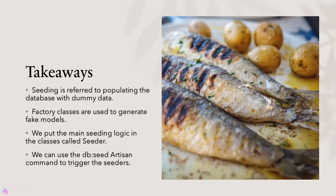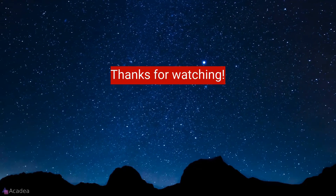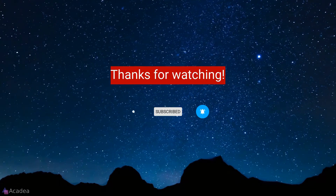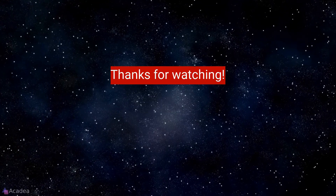Key takeaways for this lesson: seeding refers to populating a database with dummy data so we can easily test our application. Factory classes are used to generate fake model records so we don't need to create them from scratch. We put the main seeding logic in seeder classes, and to trigger them run the php artisan db:seed command. If you enjoyed the content, don't forget to like, subscribe, and hit the bell icon — thanks for your support.